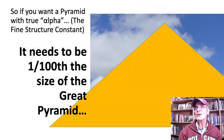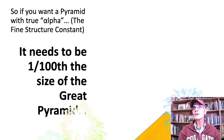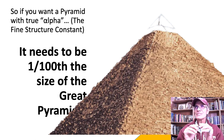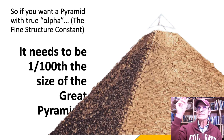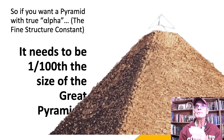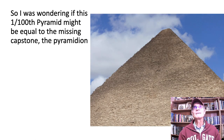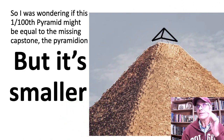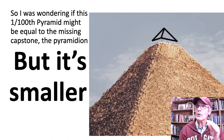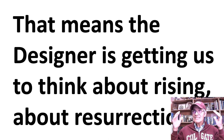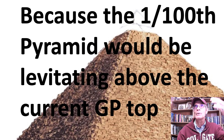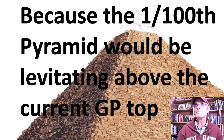That's what's embedded in there — we've got to shrink it down to 1/100th. When we do that, the 1/100th pyramid would be levitating up at the top because it wouldn't be big enough to sit in the pyramid — it would be the wrong size. So you have to move it up unless you've got a levitating top. I was wondering if this 1/100th pyramid might be equal to the missing capstone — the Pyramidion that would be on the top — but it's smaller. That Pyramidion would be smaller than the actual capstone, so it would, in a sense, be levitating. That means the designer is getting us to think about rising, about resurrection. All this mummy stuff is about getting ready for the next life. We want to rise from the dead, because the 1/100th pyramid would be levitating above the current Great Pyramid's top.